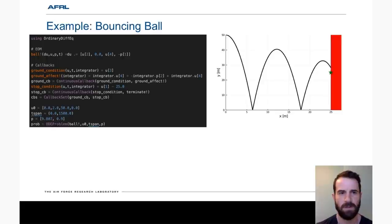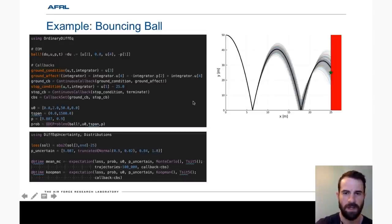So to demonstrate this capability, let's consider a bouncing ball. Here we're just setting up the ODE problem. There's nothing new here. And let's say we want to introduce some uncertainty in the coefficient of restitution, which is how much energy is lost when the ball impacts the ground.